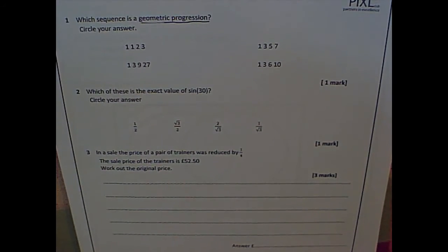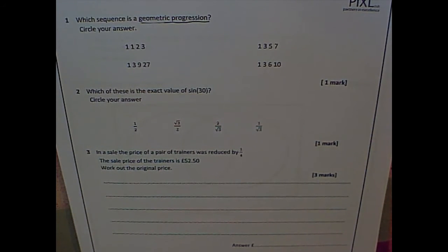You could also have it times by a half. So one, a half, a quarter, an eighth, etc. would be a geometric progression.